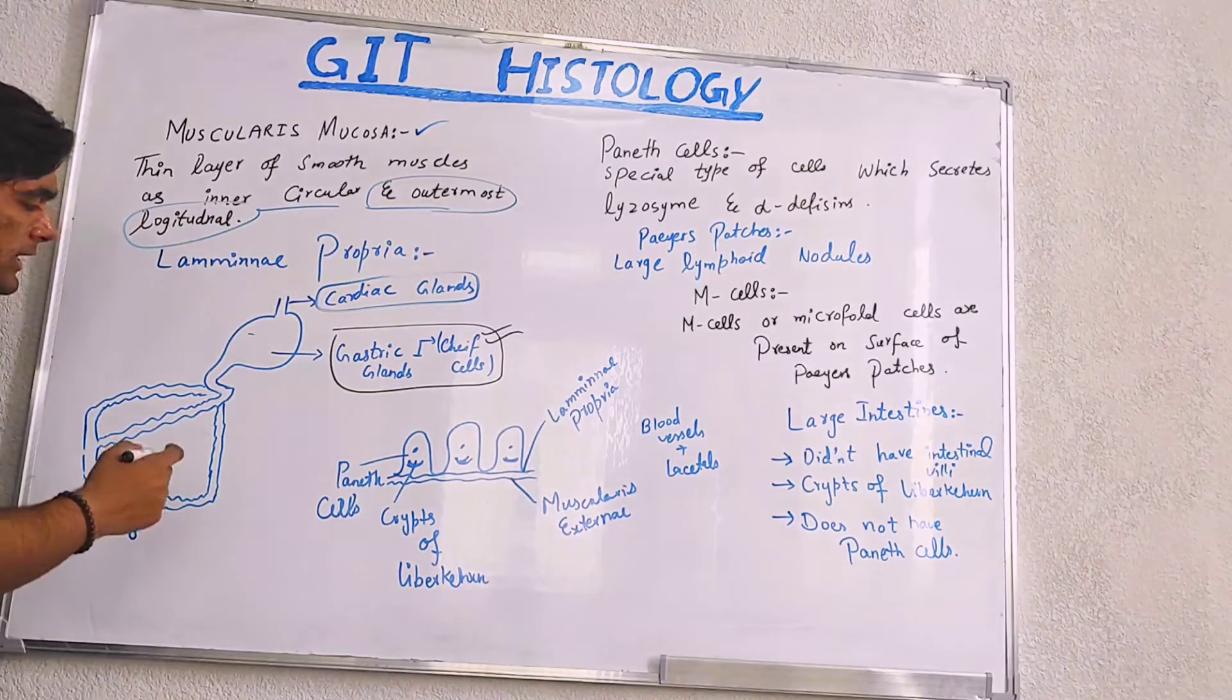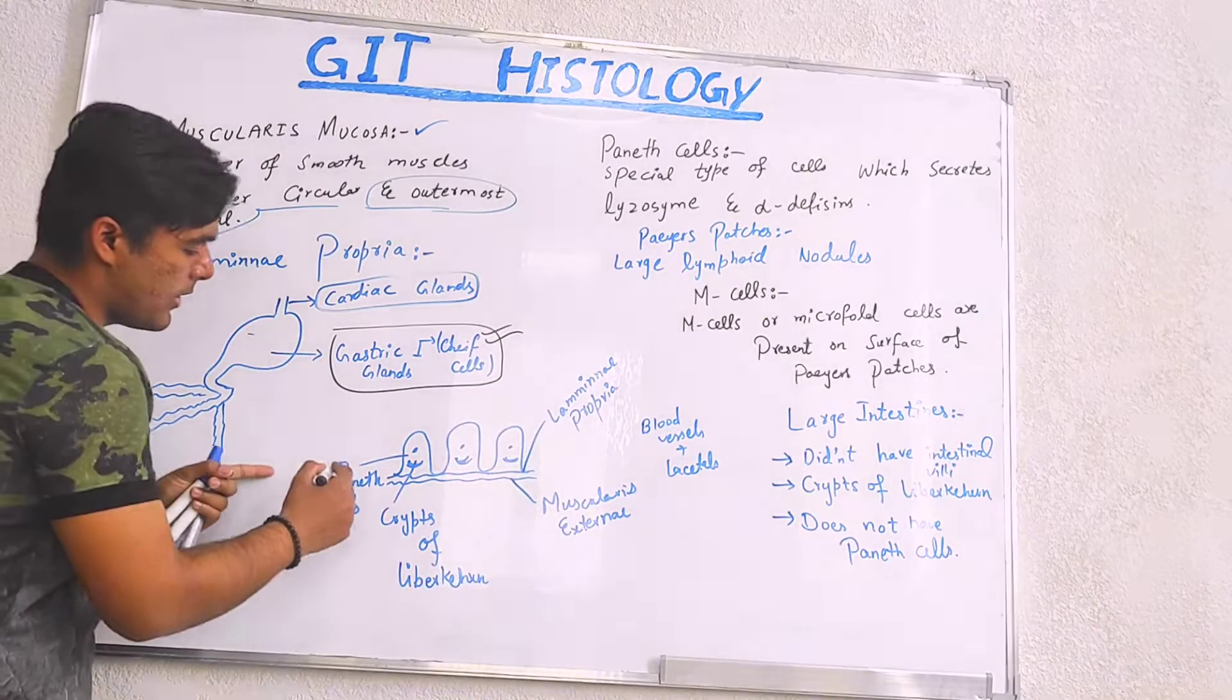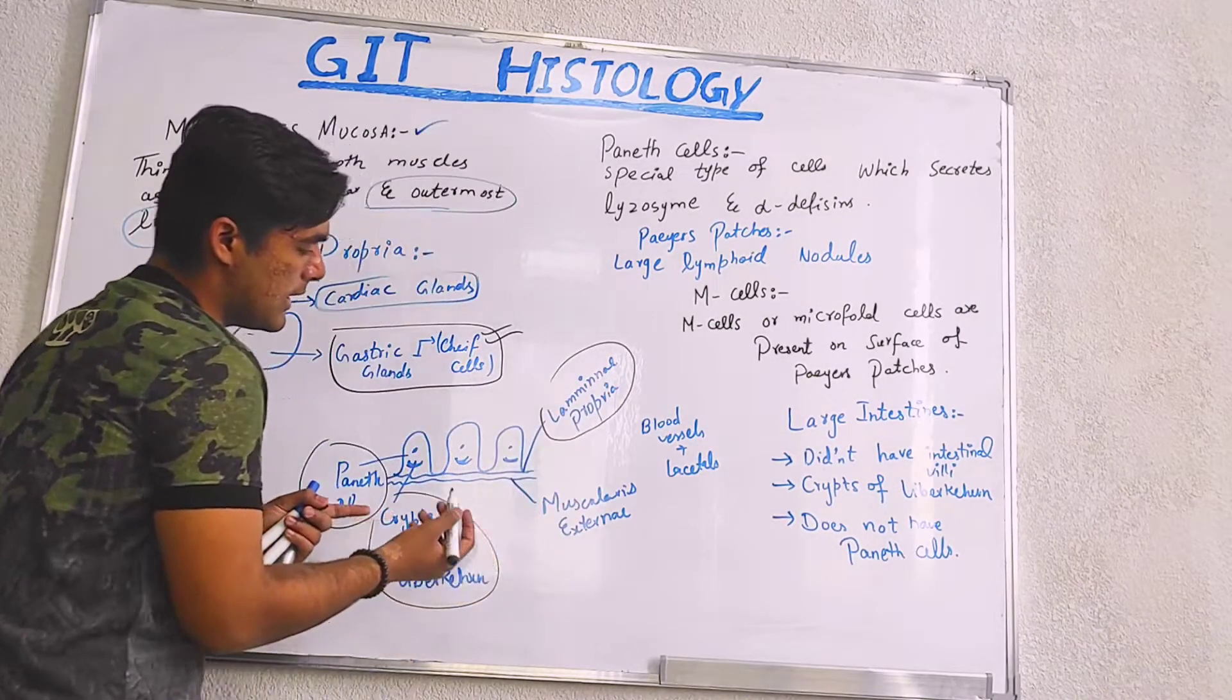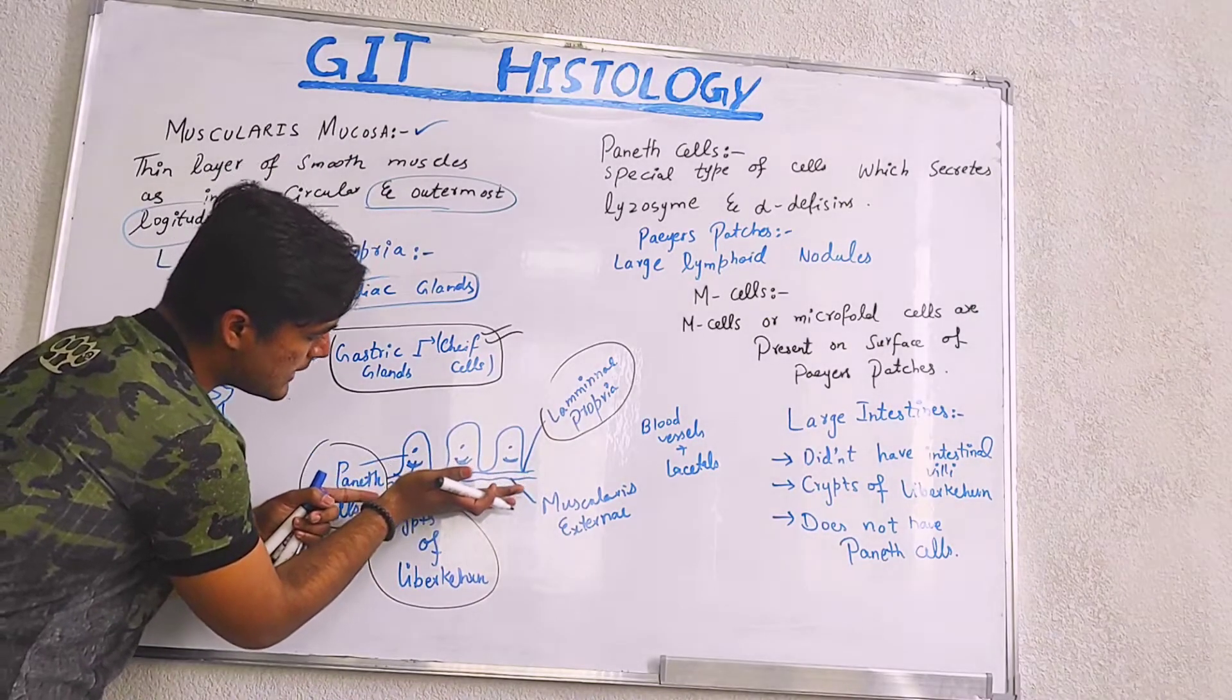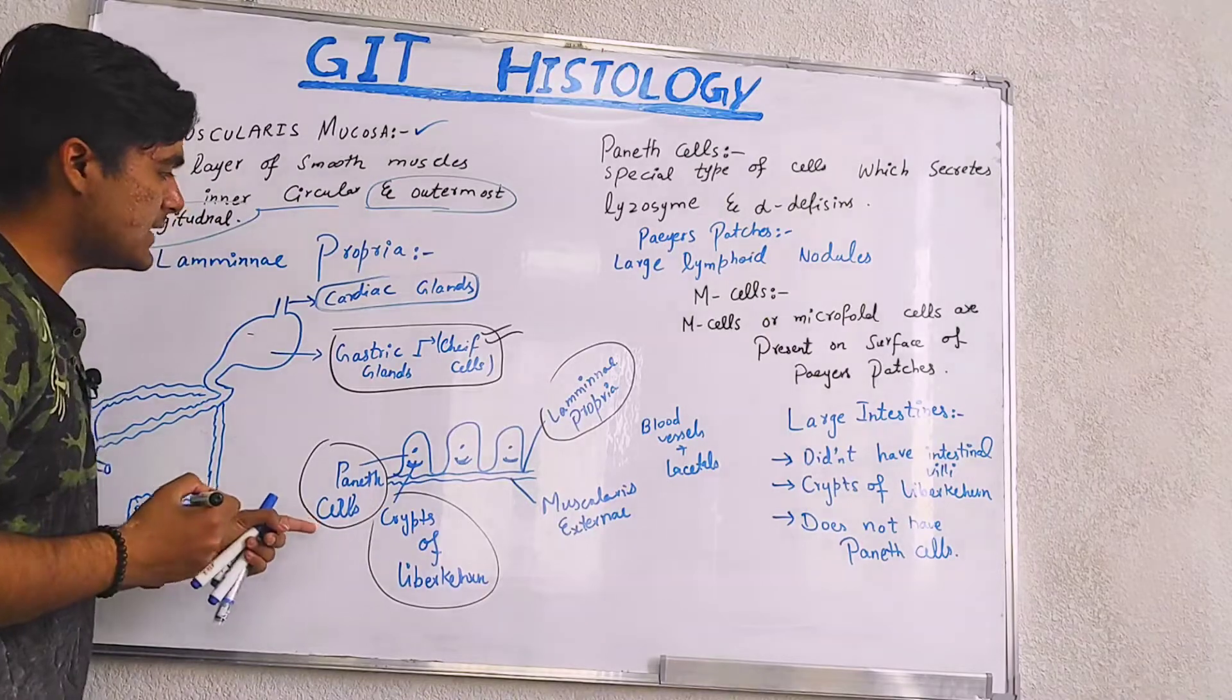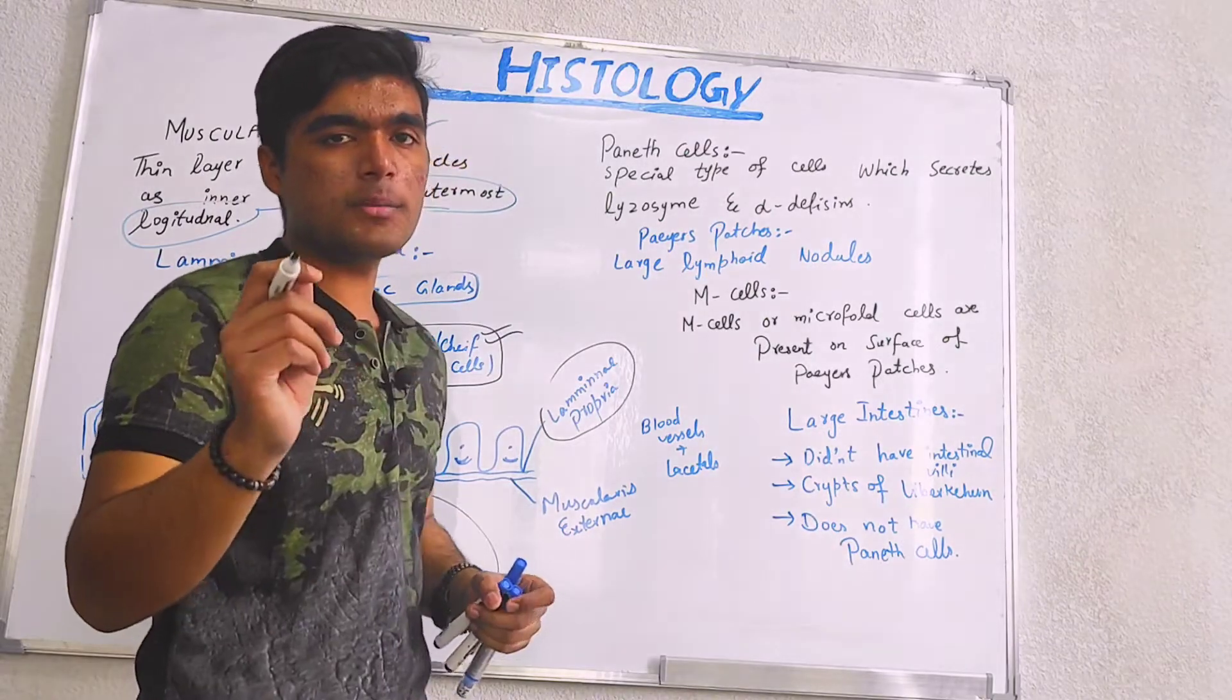In the same way, in small intestine, there are different cells having different roles. Like we have Paneth cells, we have crypts of Lieberkühn, muscularis externa as well as lamina propria. When we basically see the structure, so muscularis externa, then we have lamina propria. On that lamina propria, we have Paneth cells and we have crypts of Lieberkühn. Talking about the Paneth cells, we also have Peyer's patches and M cells.